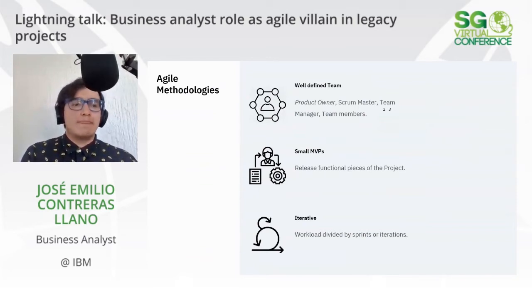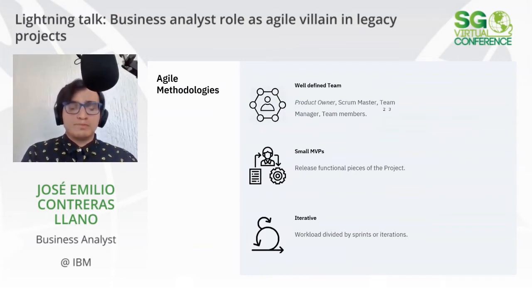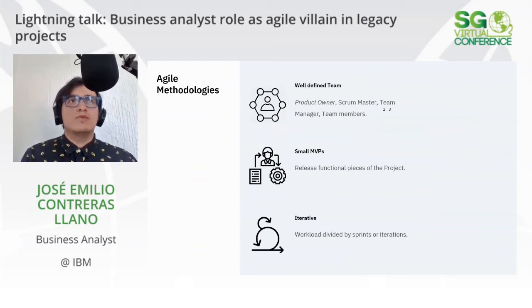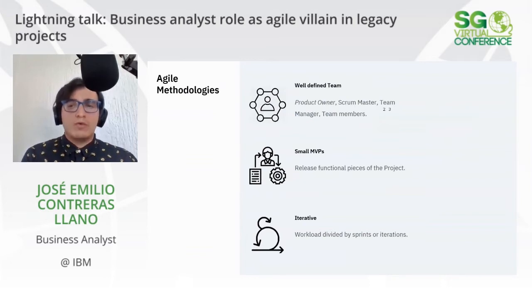Agile introduces a well-defined team structure with a product owner, scrum master, team manager, and team members. Agile's purpose is to produce small MVPs — minimal valuable products — in releases that deliver real value to the client, delivered in small amounts of time divided by sprints or iterations, rather than delivering only one large solution at a time.